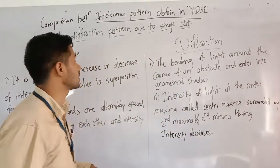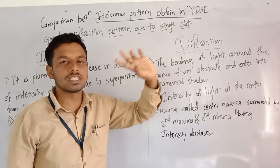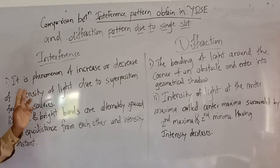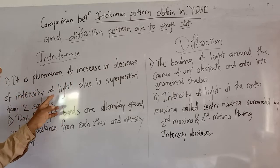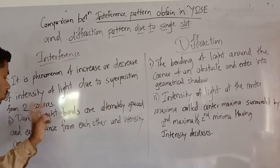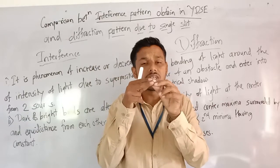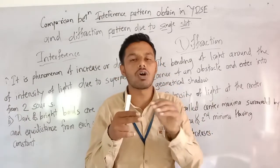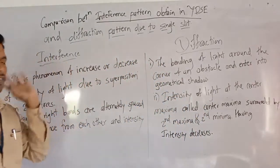Now we are discussing the comparison between interference in the YDSE experiment and diffraction in a single slit. First, interference is a phenomenon of increase or decrease of intensity of light due to the superposition of two waves. There is a maximum intensity called a bright point and minimum intensity called a dark point — constructive and destructive interference occur.